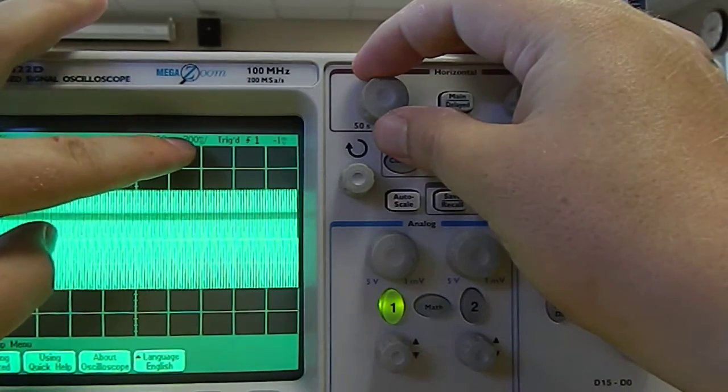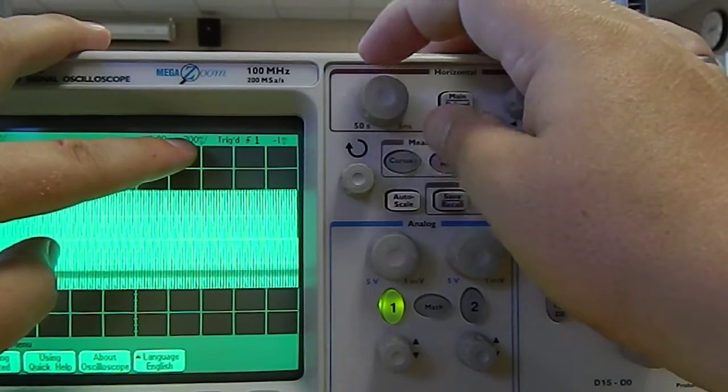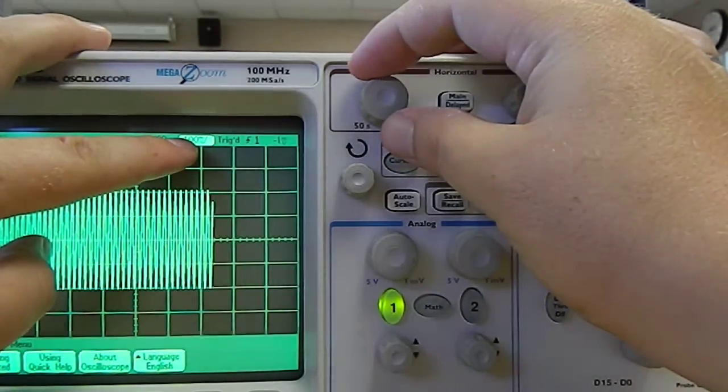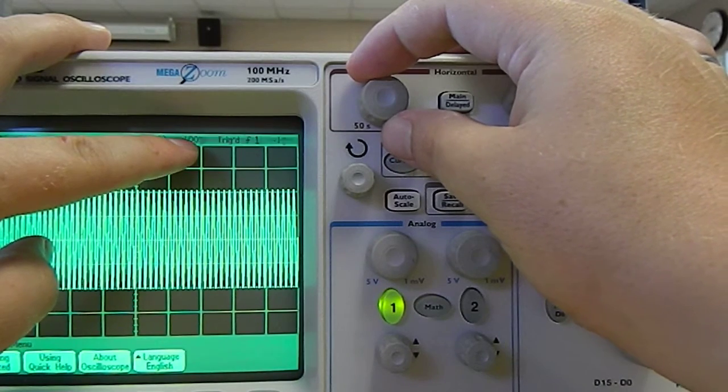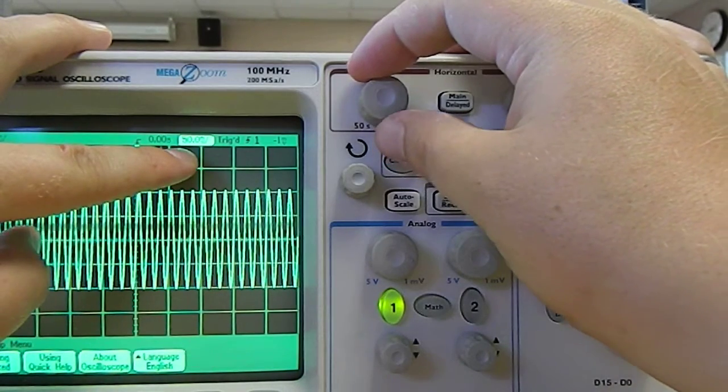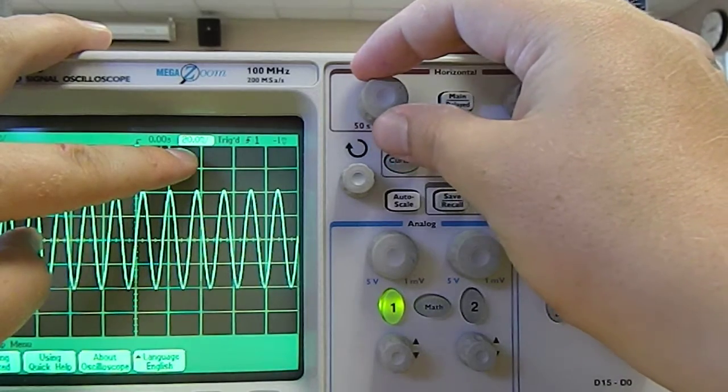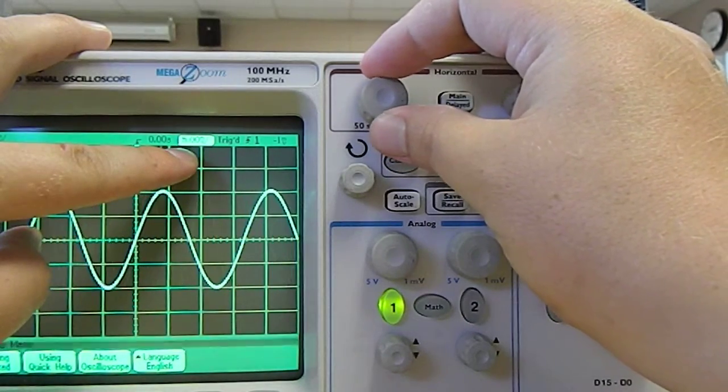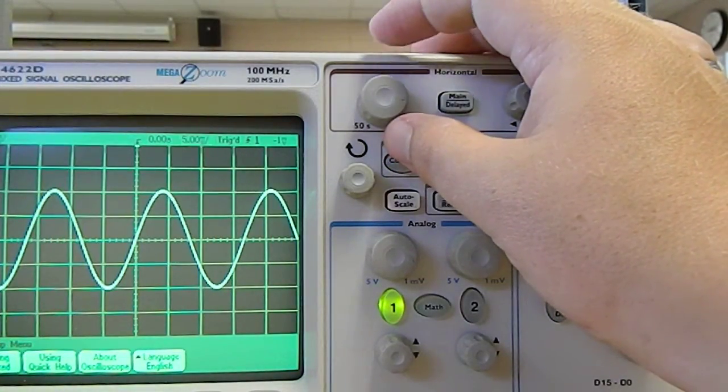And all you need to do is change this. You can see that as I change it, the value for the amount of time per division is decreasing. So, right now, it's at 100 milliseconds per division. And I can keep doing this. And so, now I'm at about 5 milliseconds per division.